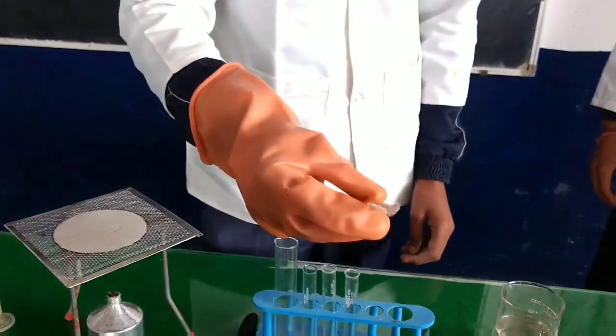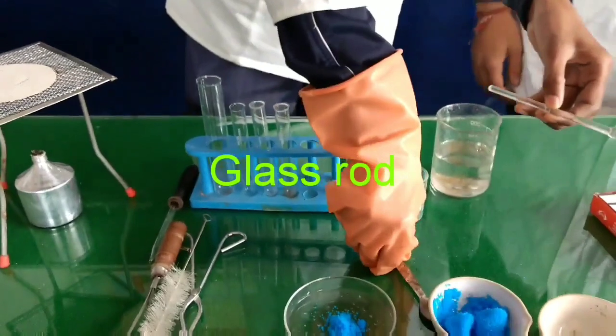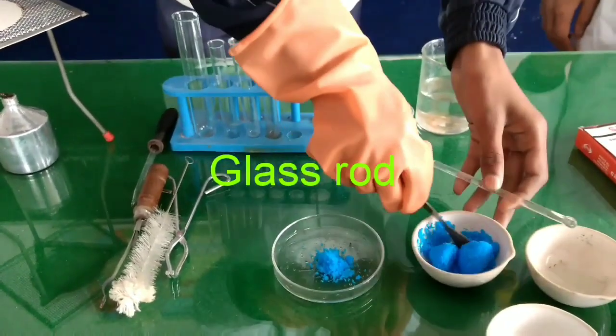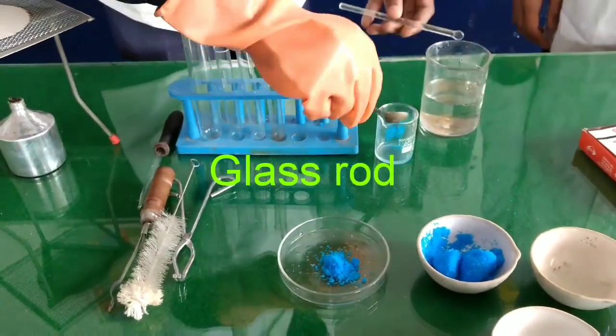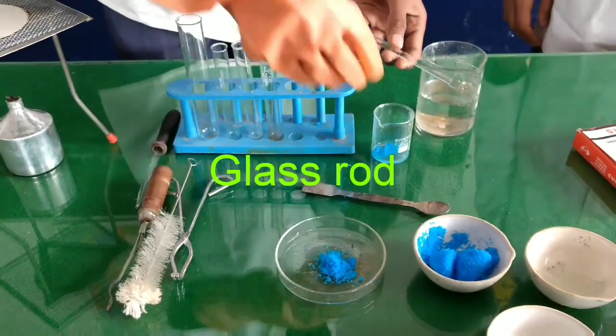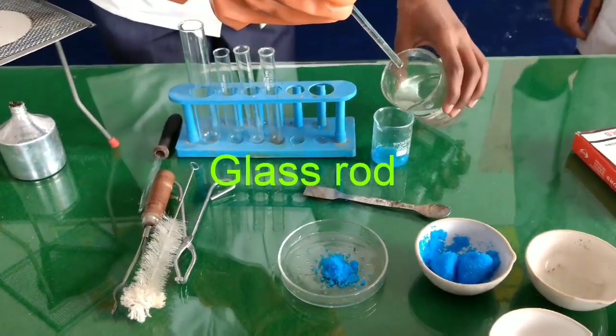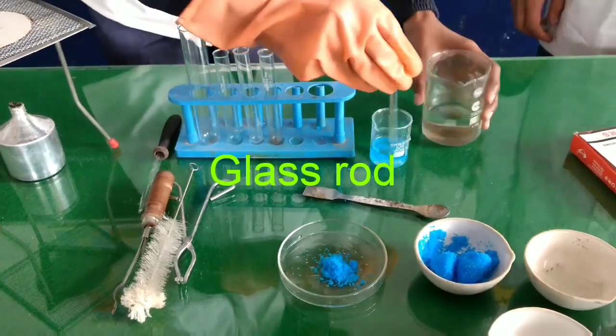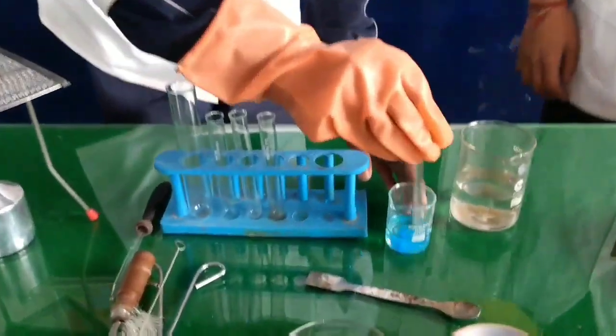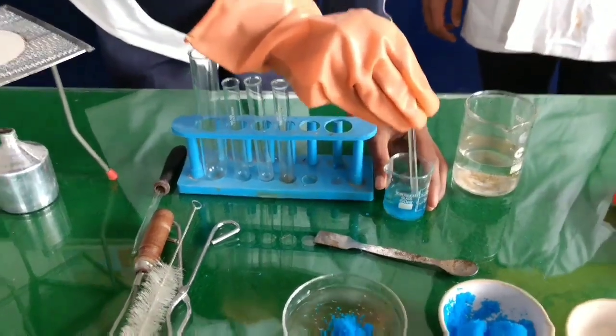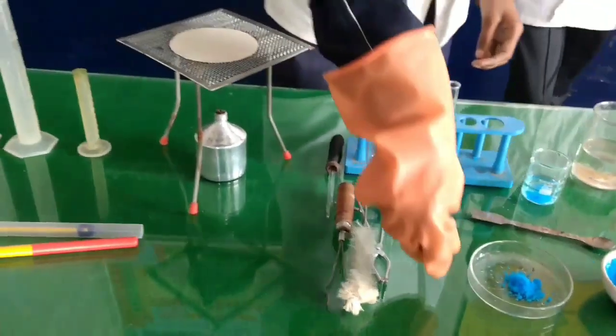And this is a glass rod. Glass rod we can use for mixing any solid in the liquid or making any homogeneous solution of liquid in liquid or solid in liquid. This is helpful in mixing the substance. You can also say it stirrer.